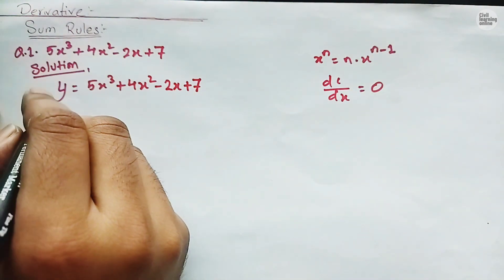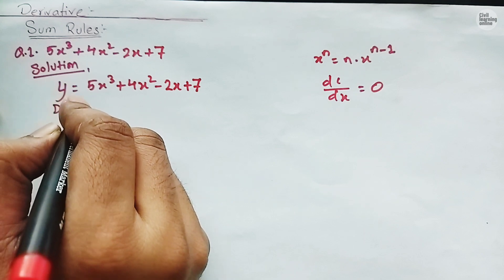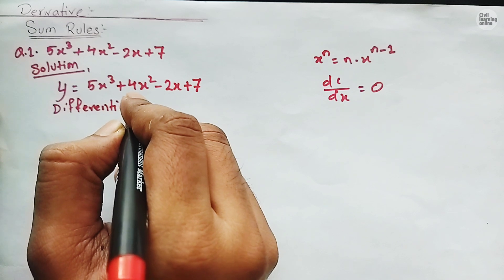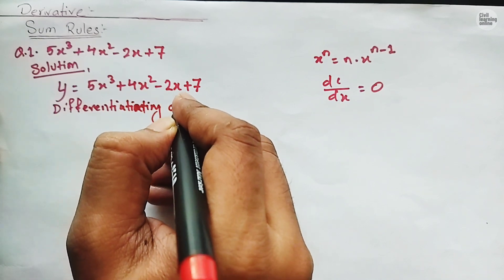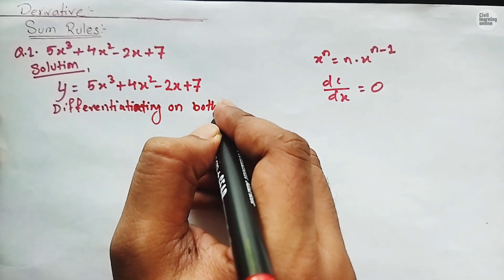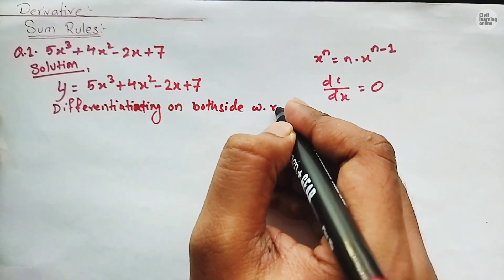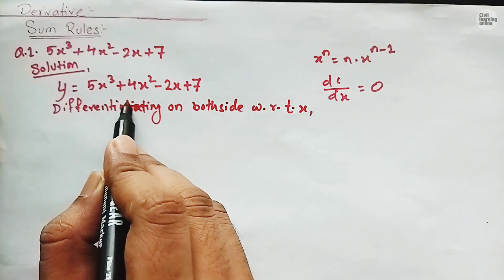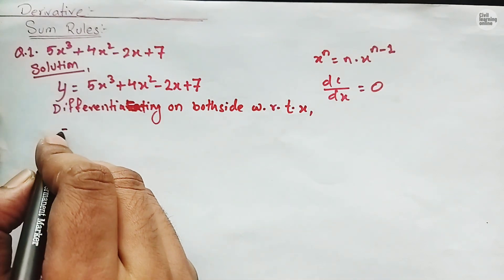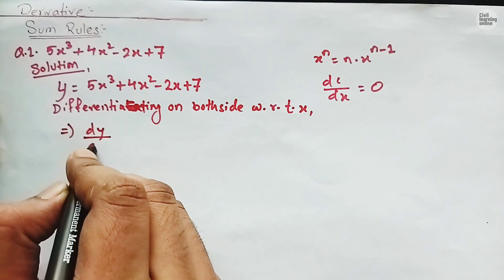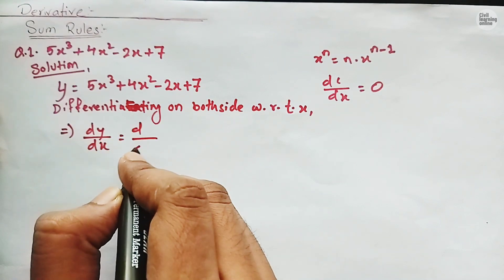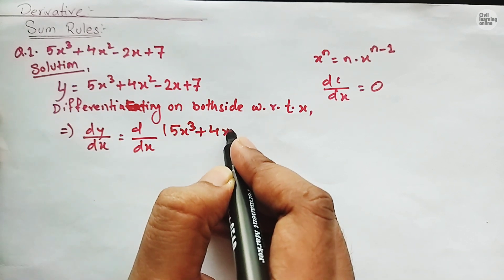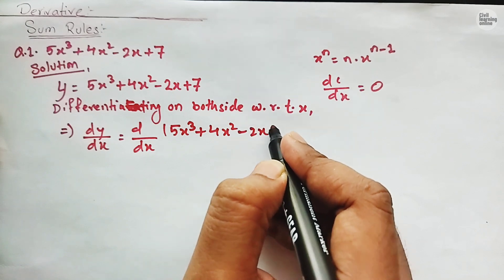Differentiating on both sides with respect to x, we will have dy upon dx equals d upon dx of 5x cubed plus 4x squared minus 2x plus 7.